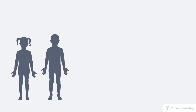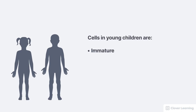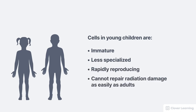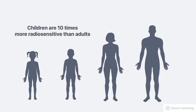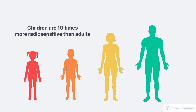On the issue of age, younger individuals are more sensitive to the harmful effects of radiation than older individuals. The cells in young children are immature, less specialized, rapidly producing, and cannot repair radiation damage as easily as cells in adults. Also, children just have more life ahead of them than adults, so there's more time for mutated cells to turn into cancer. On average, children are about 10 times more radiosensitive than adults, especially considering radiation-induced cancers.